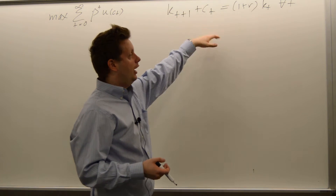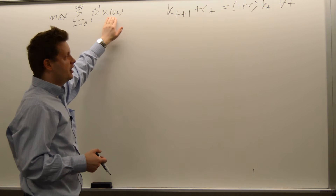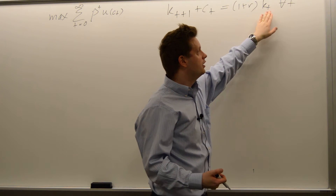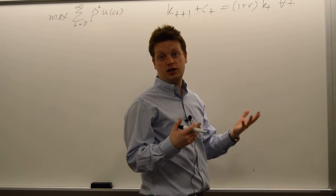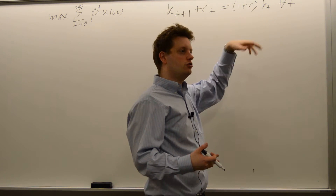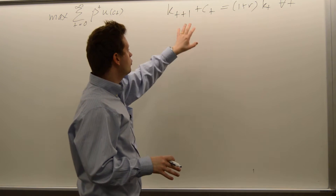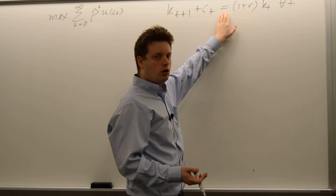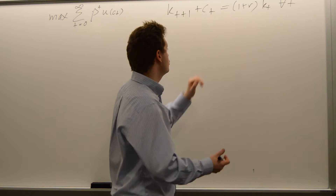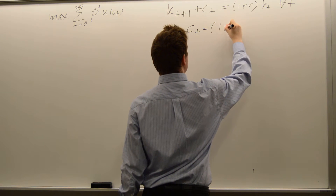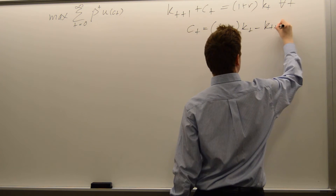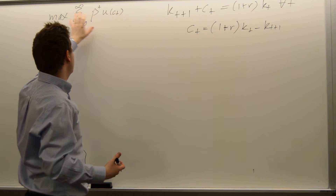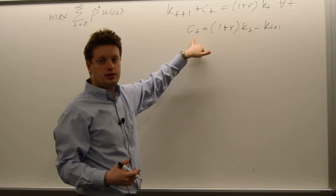We have one constraint at all time periods, so an infinite number of constraints, and we maximize with respect to consumption and tomorrow's capital stock. Note that k0 needs to be given, so we have an initial capital stock — it can be zero or any value — but we need to have a value for the initial capital stock so we can maximize. Now while we can transform this directly into a dynamic programming problem, I will do one step of simplification. That step is related to this equality in the constraint. Because there is an equality, I can solve for ct. So ct will be equal to 1 plus r times kt minus kt plus 1. If I do this transformation and plug it into the utility function, I can then just maximize with respect to kt plus 1, and I drop ct — so I only have one variable left.